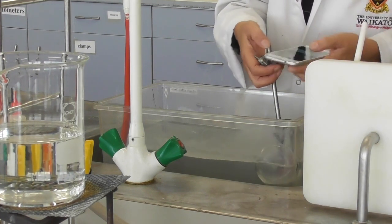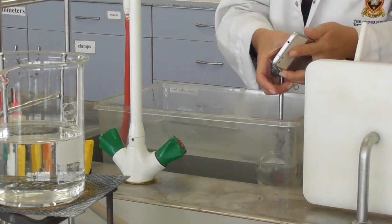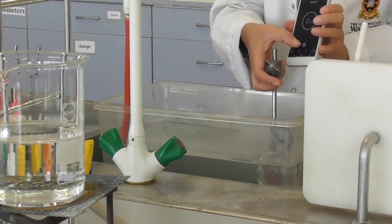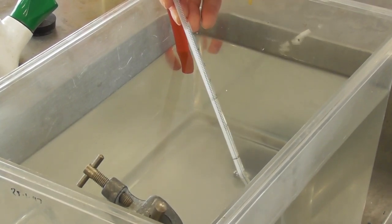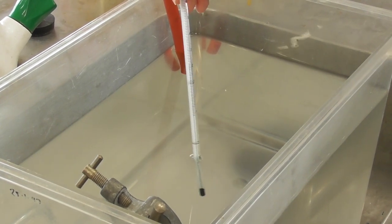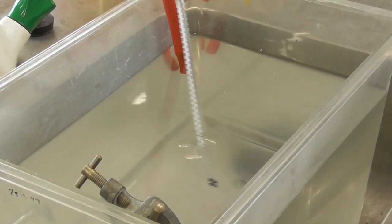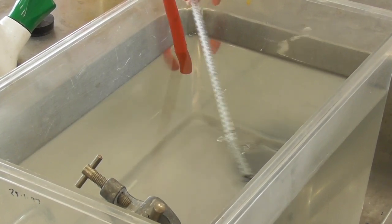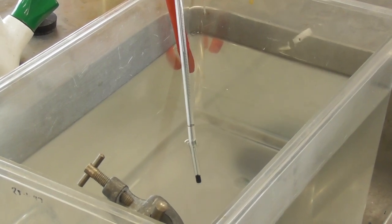We start our timer again. It's another five minutes for the flask to be in the cold water so that the temperature again can adjust to the temperature of the water bath. We can take a reading of the temperature for the water bath and write this down on our sheet as well.